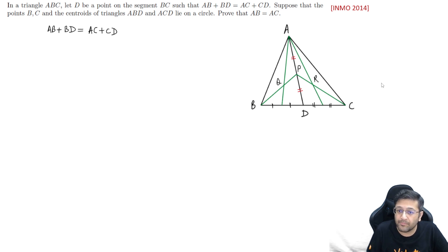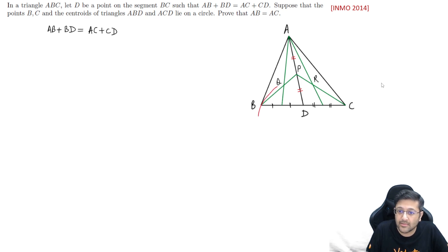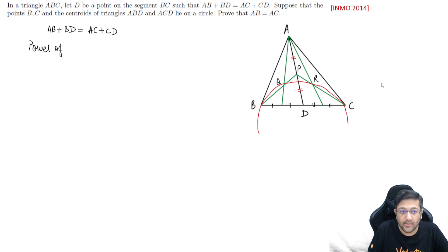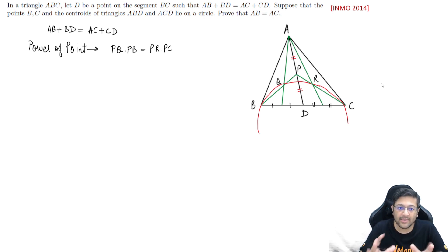Now, there is a circle passing through B, Q, R, and C — this is given. So B, Q, R, and C are lying on a single circle. How do we make use of that? We use the Power of a Point. The power of point P with respect to the circle should be equal from both secants. So we can write: PQ times PB equals PR times PC.